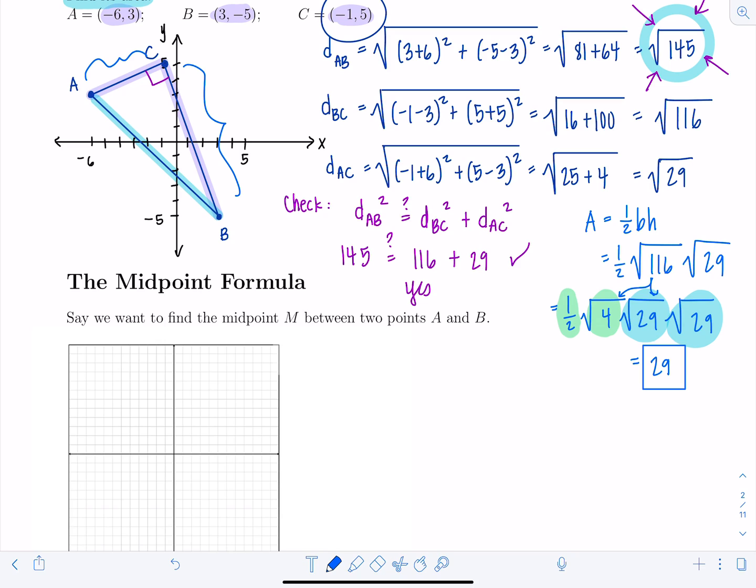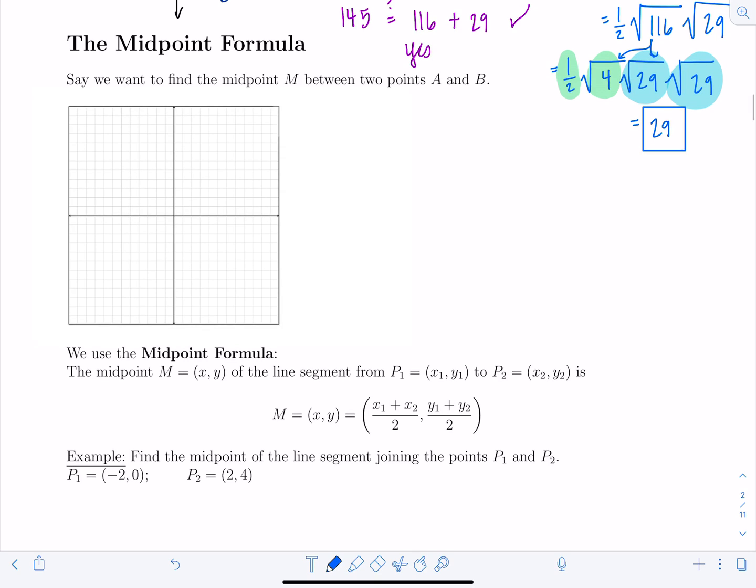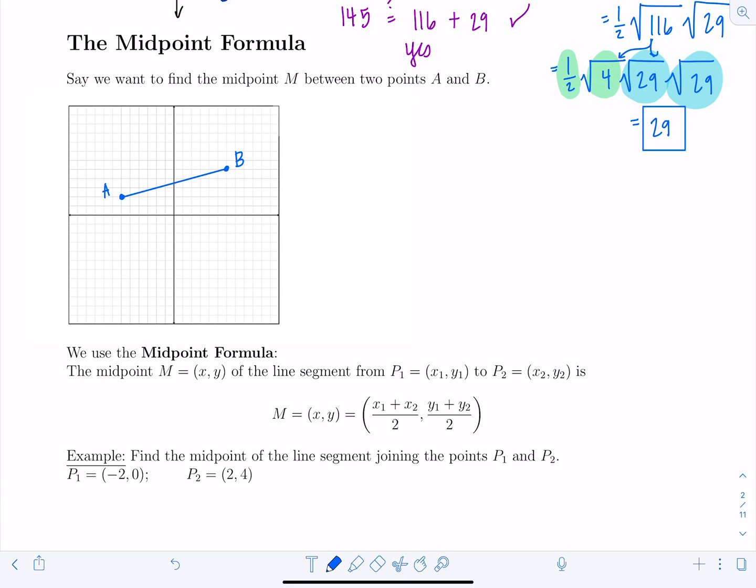Enough with the distance formula. Let's move on to the midpoint formula. So say we want to find the midpoint M between two points A and B. So say we have our points A and B. They don't have to be the same points as last time. Okay. The midpoint is going to be the halfway point. Here's the midpoint, let's say, where the length of this segment is equal to the length of the other segment here, halfway point.